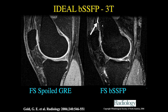Another technique we used for quite a while is IDEAL — a 3D technique that allows T2-weighted imaging and intrinsically provides in-phase and out-of-phase acquisitions, giving fat-suppressed, non-fat-suppressed, fat, and water images — four different kinds of images from one acquisition. However, there is not the best contrast between articular cartilage and fluid with this technique.